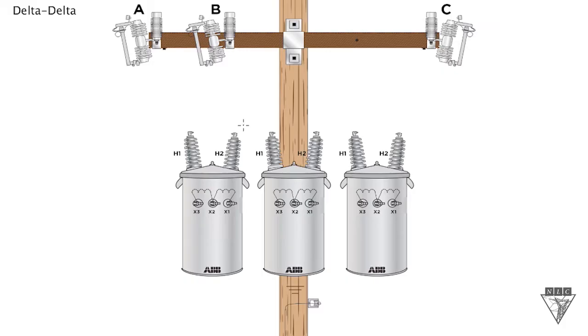The first thing we want to do is tie our H2 bushings to an H1 bushing. Do that in all three here. We're going to go all the way across. So we've got our H1 tied to an H2, H1 to an H2, and an H1 to an H2.